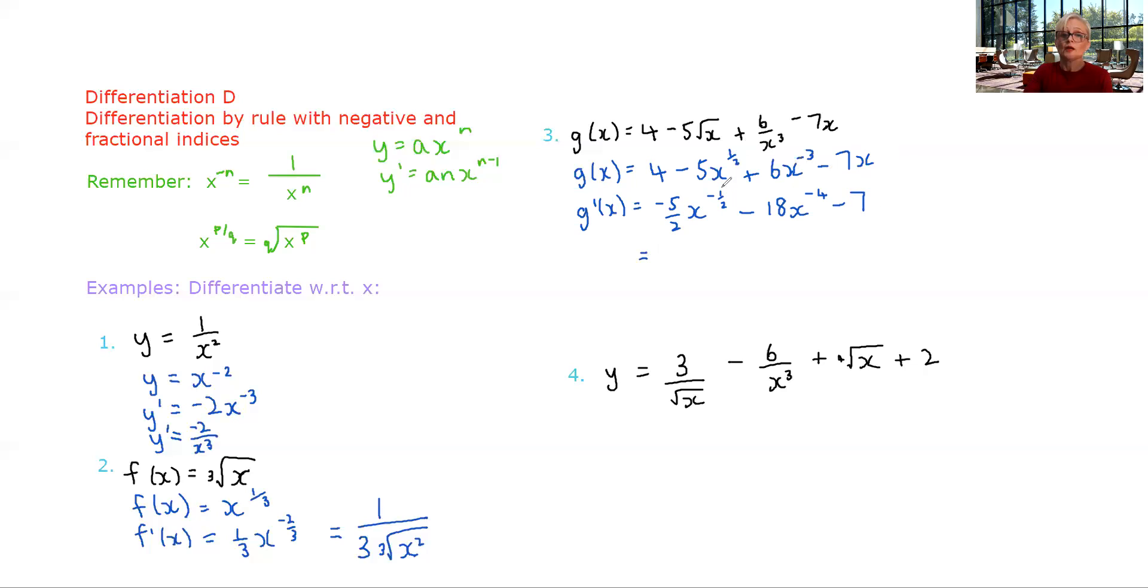This bit here, okay. We've got an x to the negative half. So that's going to be the same as x to the half in the denominator and x to the half is the square root of x. x to the negative four is the same as x to the four in the denominator. And there you go. Okay. One more. Good luck.